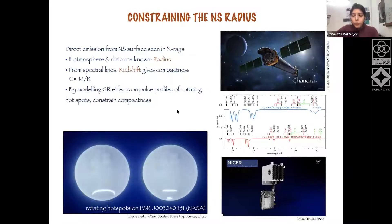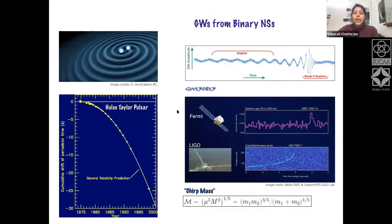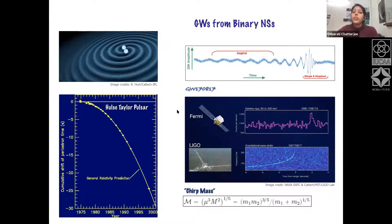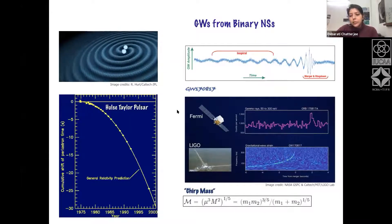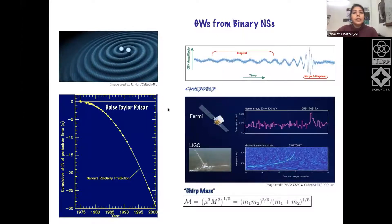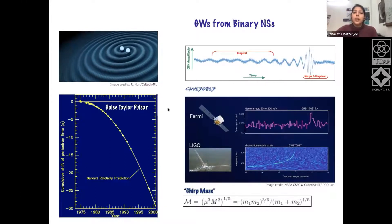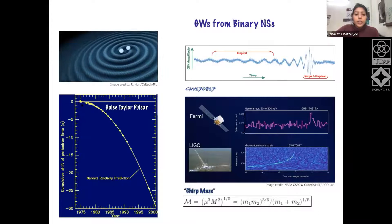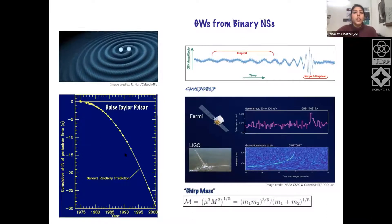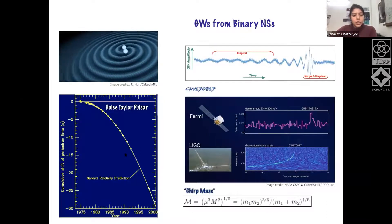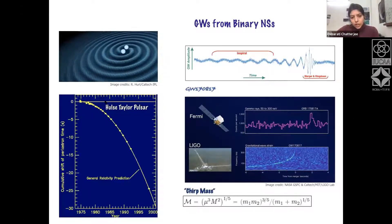One observation has opened up an entirely new window to understanding neutron stars: the recent discovery of gravitational waves. Gravitational waves were predicted by Einstein with general relativity. As early as 1975, there was an indirect observation of gravitational waves from the Hulse-Taylor pulsar binary — Hulse and Taylor measured the change in the cumulative shift of the orbital trajectory, and showed it exactly follows Einstein's prediction, winning them the Nobel Prize.